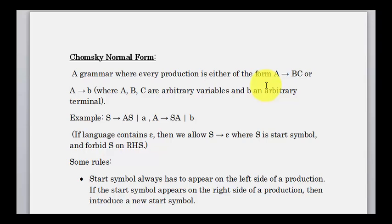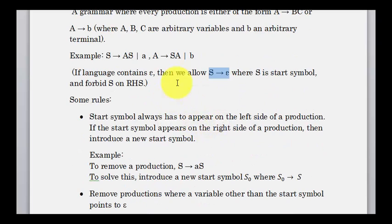The three main principles of converting a context-free grammar into Chomsky normal form are: a variable pointing towards exactly two variables, a variable pointing towards one terminal, and if there is an epsilon transition, it should always come from the start symbol — not from any other variable like A or B. Only S goes to epsilon is allowed.